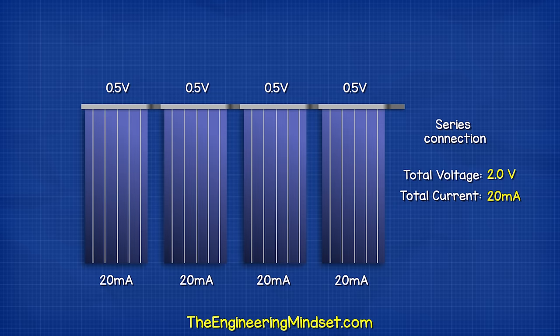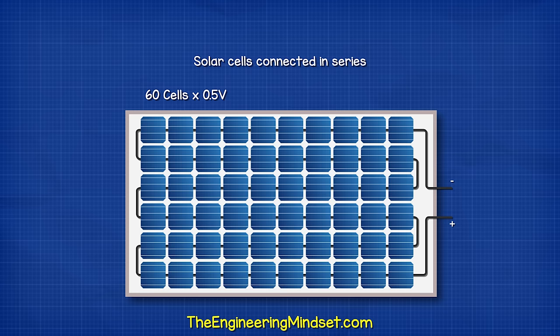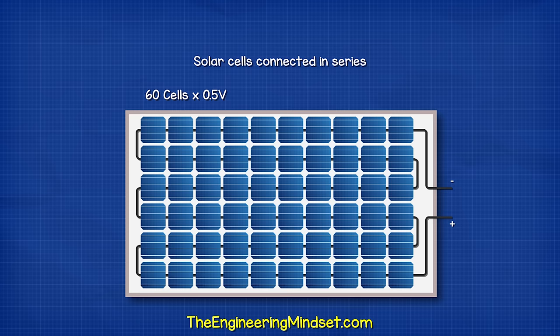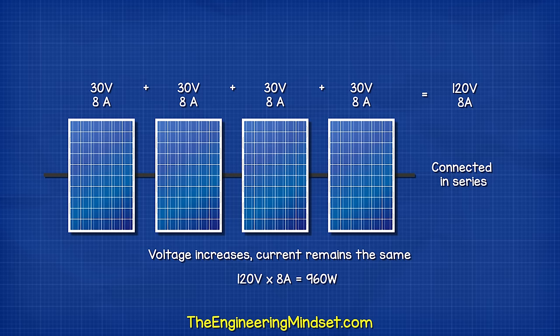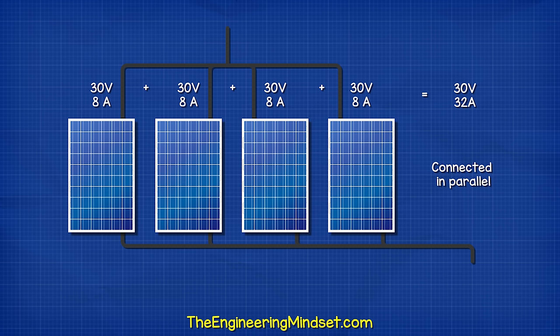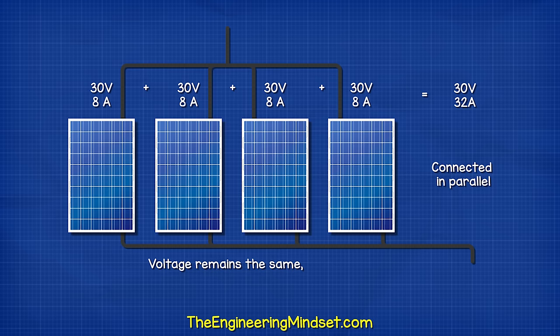When we connect cells in series, the voltage adds together, but the current remains the same. This module uses 60 cells, each providing around 0.5 volts and 8 amps of current. So it produces around 30 volts and 8 amps. This gives us 240 watts of power. If we connected four of these modules in series, we would get 120 volts and 8 amps. The voltage adds together, but the current remains the same. This gives us 960 watts. But if we connected four in parallel, we get 30 volts and 32 amps. The voltage is the same, but the current adds together. This also gives us 960 watts.